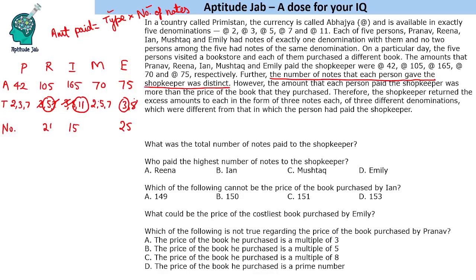So to summarize: the person who paid 42 had denomination 7 and paid 6 notes; the person who paid 75 had denomination 3 and paid 25 notes; the person who paid 165 had denomination 11 and paid 15 nodes; the person who paid 105 had denomination 5 and paid 21 notes; and the person who paid 70 had denomination 2 and paid 35 notes.